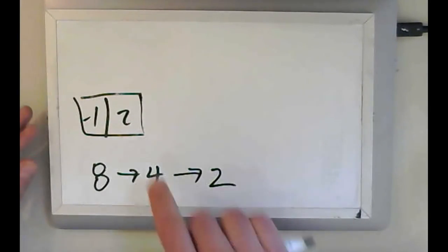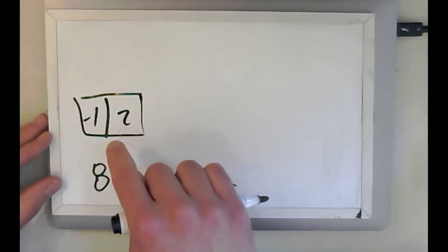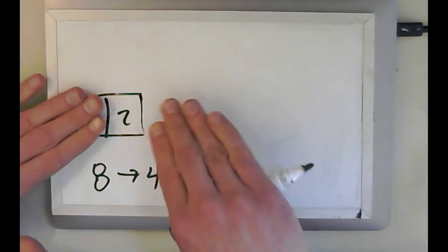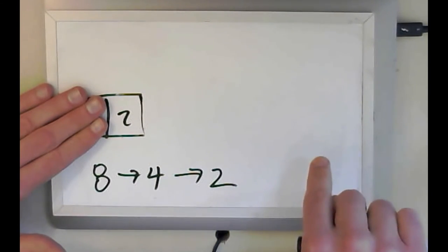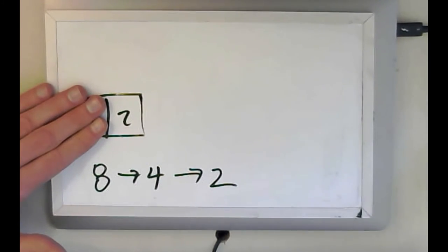Now I essentially do the same thing. Now in this case, I picked two. So now the right part of the array is empty at this point. I know that if three was in the array, it would have to be in the right part. It'd have to be to the right of two. But because there's no more values to look through, I'm done. Three is not in the array.